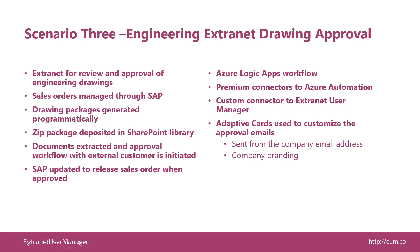We'll wrap it up with a third scenario: an engineering extranet drawing approval process. This one's a little more sophisticated, also using Logic Apps, connecting into Azure Automation, but also a custom connector into our extranet user manager product, some integrations into SAP, and using customized adaptive cards to go a little further with the approval process — making sure we can send them from the company email address, apply branding to them, and such.